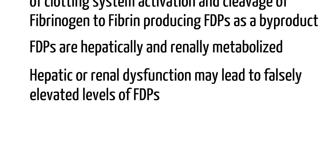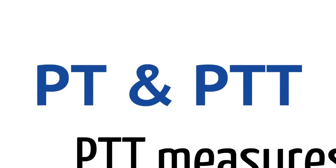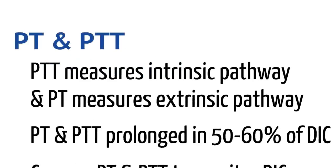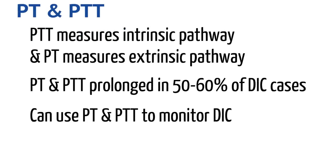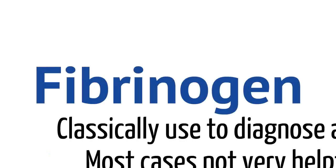Now we will look at the coagulation labs we commonly get on patients — PT and PTT. PTT measures the intrinsic pathway, and PT measures your extrinsic pathway. In about 50 to 60% of patients who have DIC, you will have a prolonged PT and PTT. Thus, you can actually use the PT and PTT to monitor DIC patients because they measure the pathways involving the factors that are consumed in DIC.